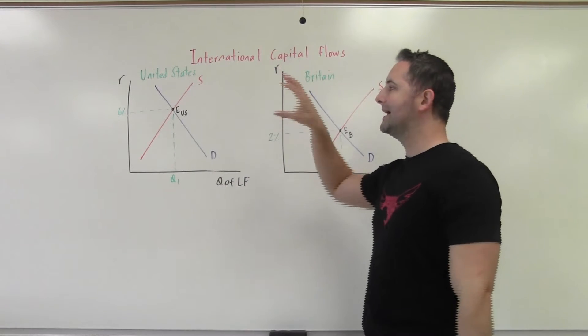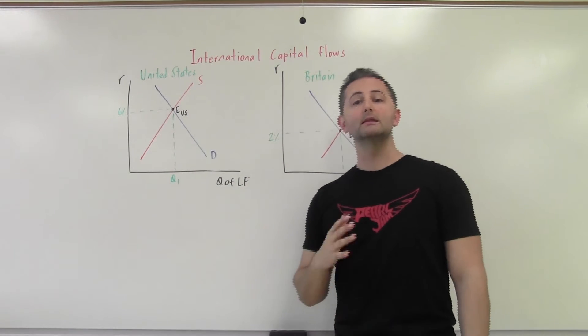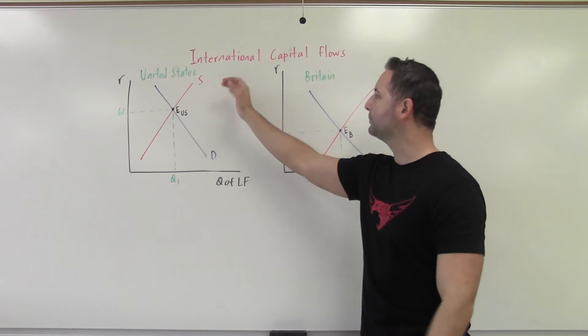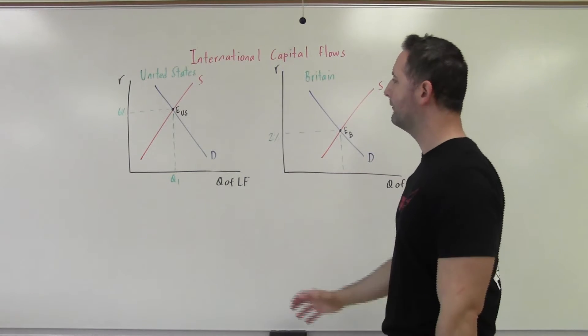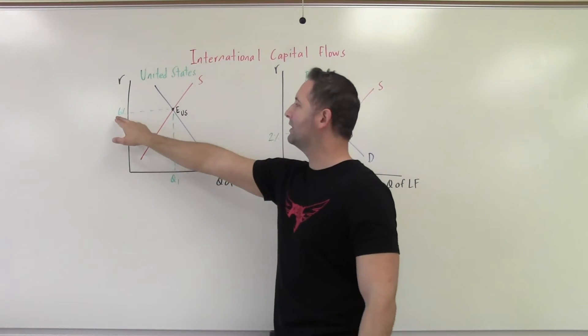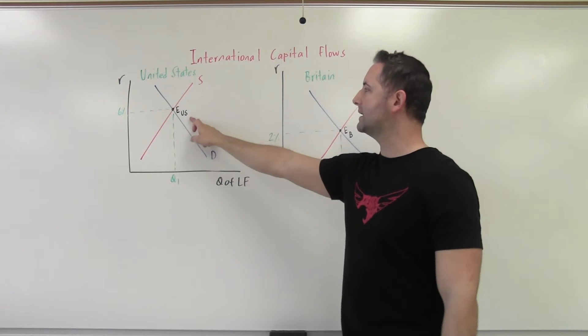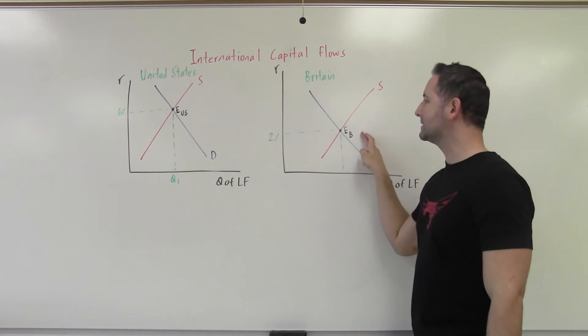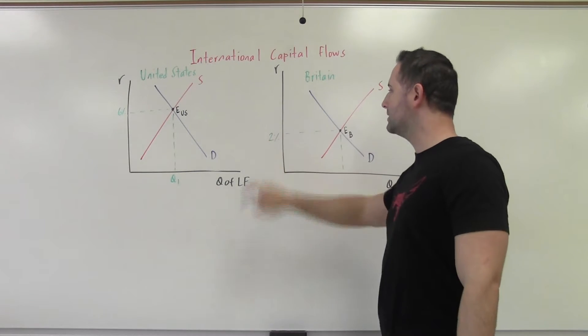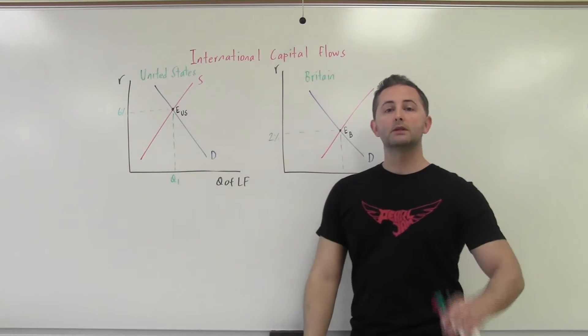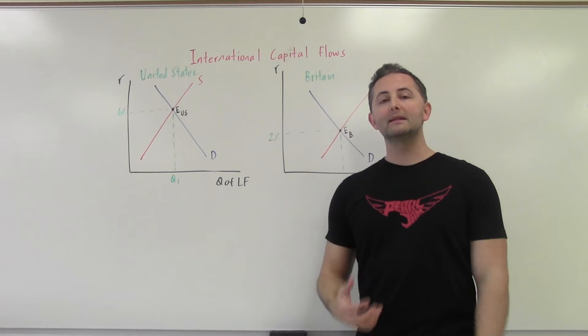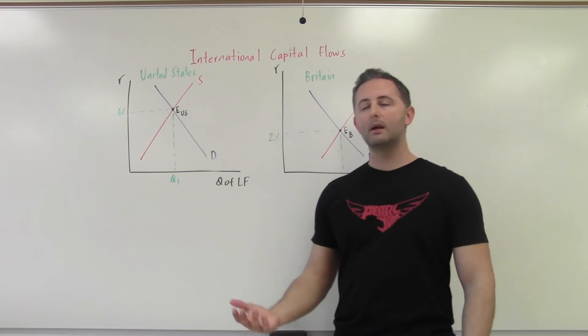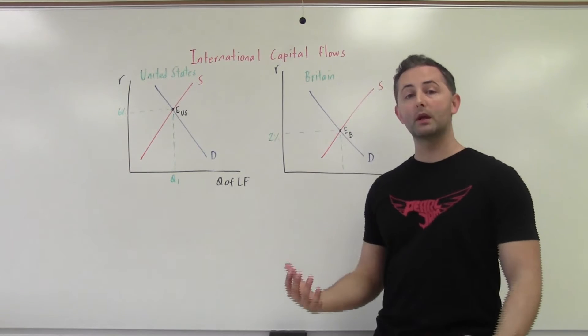So now we're looking at how interest rates are affected by more than just what the Fed does or United States behavior. In this example, we have an equilibrium interest rate in the United States of 6%. In Britain, at the same time, that equilibrium interest rate is 2%. So if everybody is able to lend their money in different countries, we have an open economy.